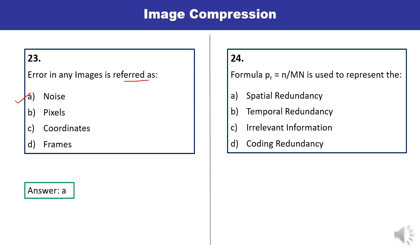Question 24: The formula PR = N upon MN, where MN is the size of the image, is used to represent — spatial redundancy, temporal redundancy, irrelevant information, or coding redundancy? If you remember the formula of coding redundancy, you can pick the option very quickly. Answer is D.